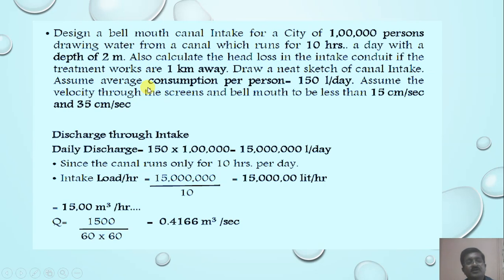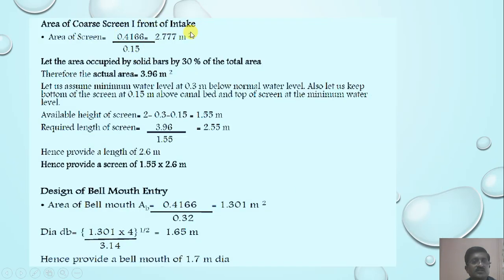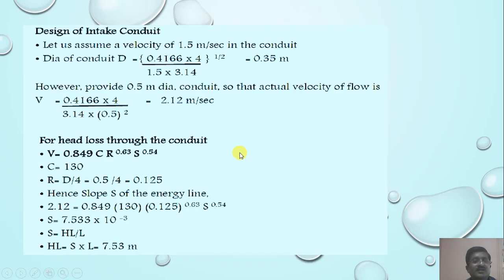An example has been given where we want to design a bell mouth intake for one lakh persons. You can perform the calculations yourself. You have to calculate the daily discharge of water according to standards. The discharge is calculated, and from that the area of the coarse screen can be calculated. Then the design of the bell mouth entry is calculated using a formulation — knowledge of trigonometry is needed here. Then the design of the conduit is worked out using the velocity formula.